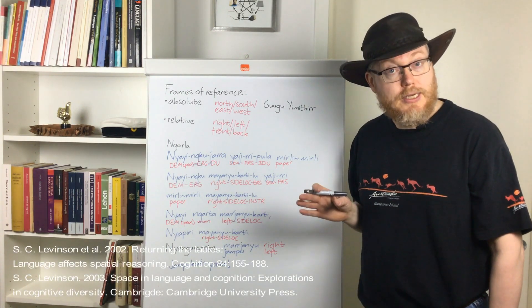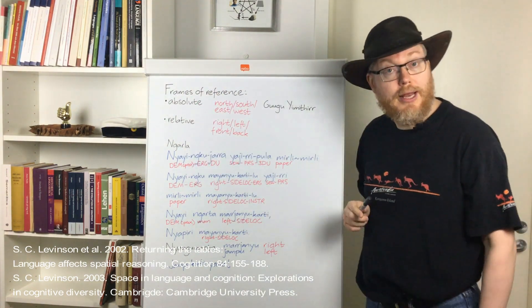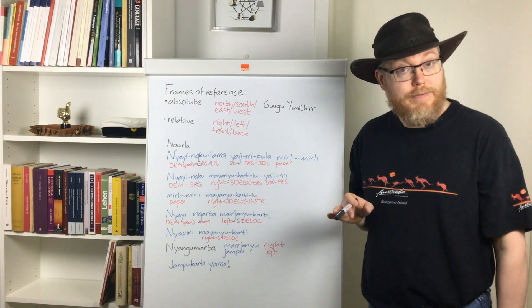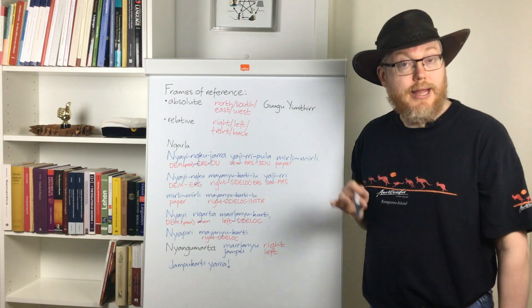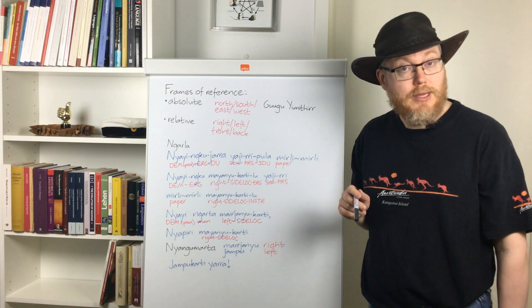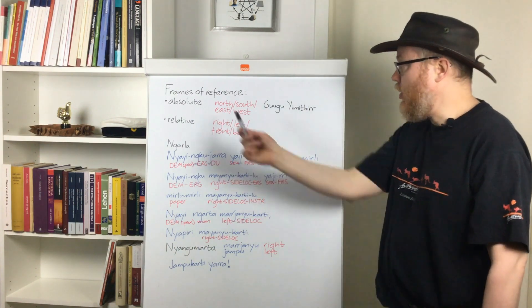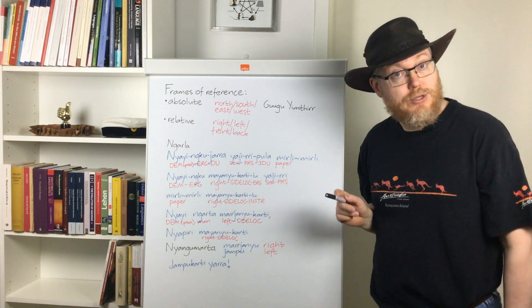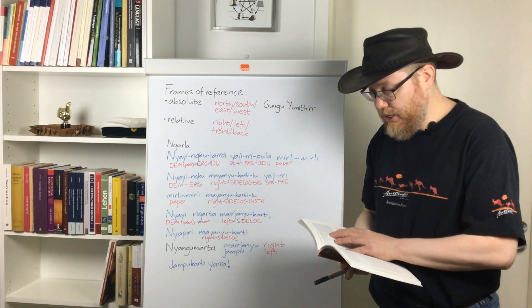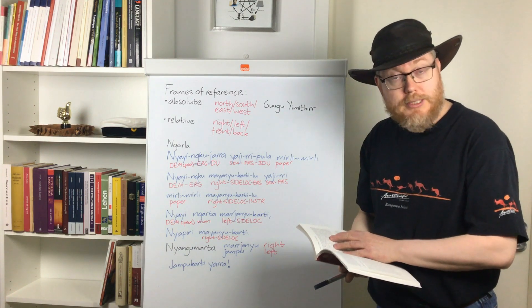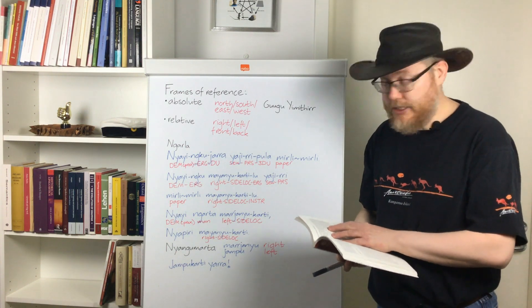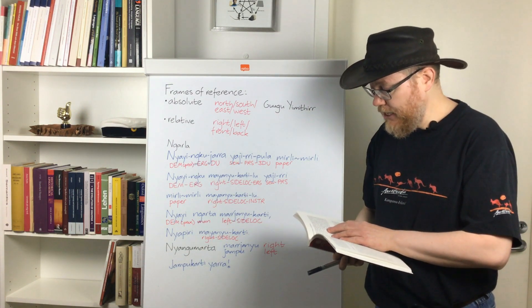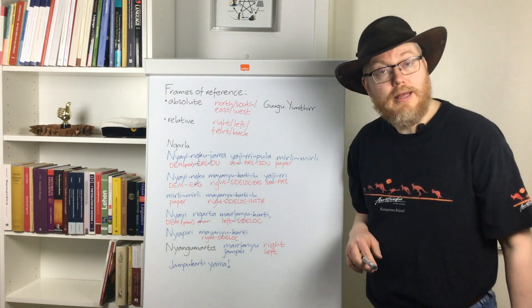If you read Levinson, this terminology by the way is taken from Levinson et al. 2002 and Levinson 2003. If you read Levinson you can see that neighboring and closely related languages often have different frames of reference as Levinson calls these. And in fact in Levinson 2003 he introduces what he calls a preliminary typology of frames of reference found in the world's languages. Frames of reference that are systematically distinguished in the grammar and lexicon of different languages.